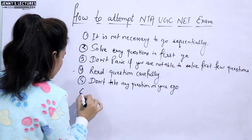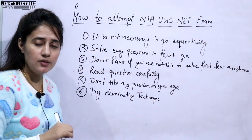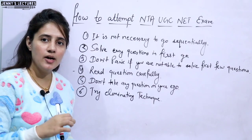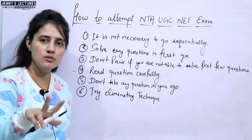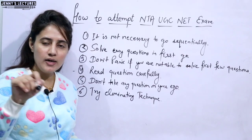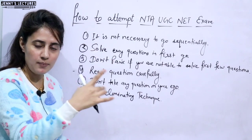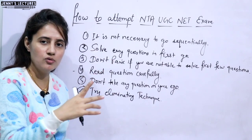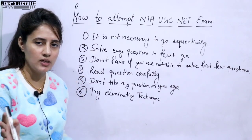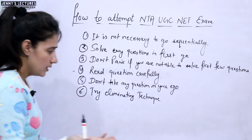You can also try the eliminating technique. If you don't know the answer, and you have four options but you know that two of them are definitely not the answer, you can discard those options. From the remaining two, try to find the correct answer. This elimination technique can help you narrow down your choices.